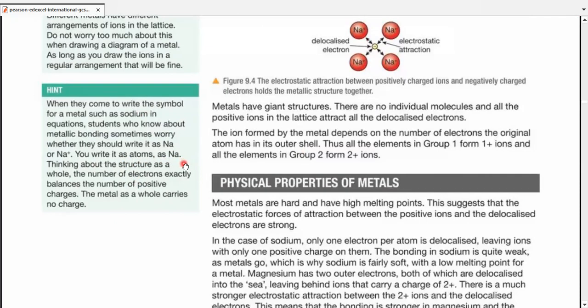Not ions. Thinking about the structure as a whole, the number of electrons exactly balances the number of positive charges, so the metal as a whole carries no charge. That's neutral.